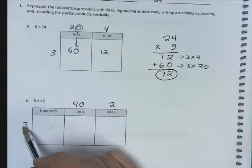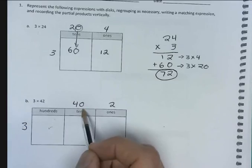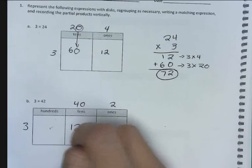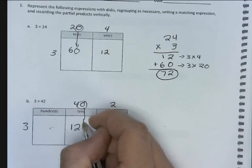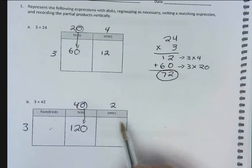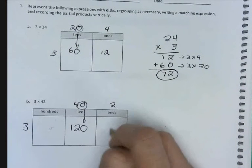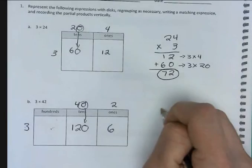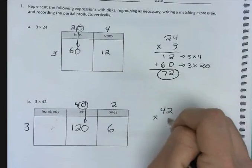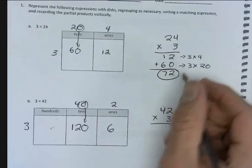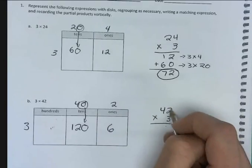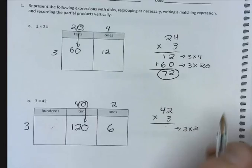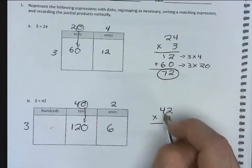So 3 times 40. Cover our 0. 3 times 4 is 12. Put our 0 back onto our answer, so we have 120. 3 times 2 is 6. Now we're going to do our partial products over here to the side. 42 on top times 3. We're going to do our ones place first, 3 times 2, then our tens place, 3 times 4 tens, which is 40.